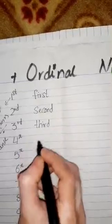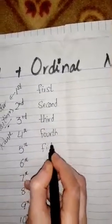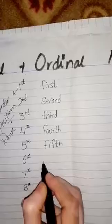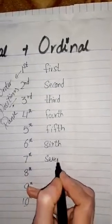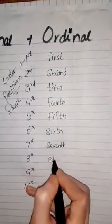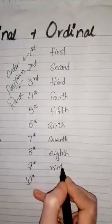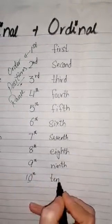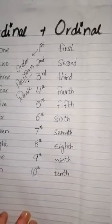Now I write spelling of first, second, third, fourth, fifth, sixth, seventh, eighth, ninth, and tenth. Cardinal numbers are those numbers when we talk about quantity.